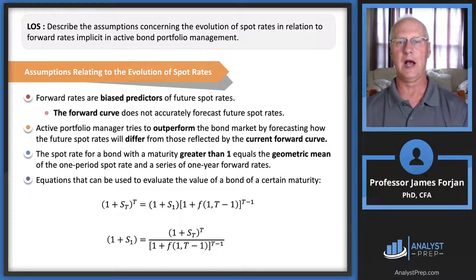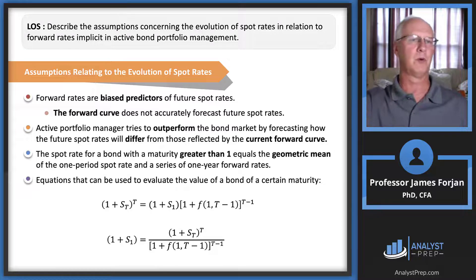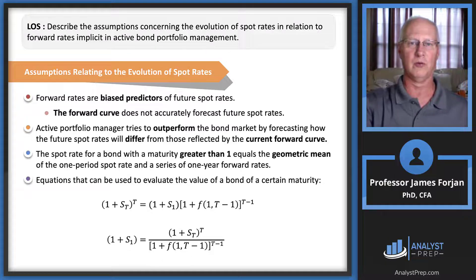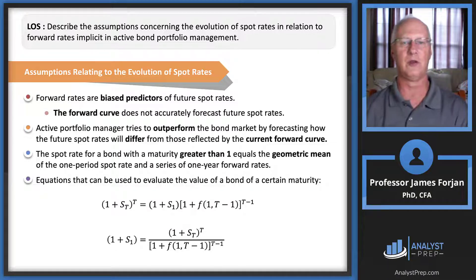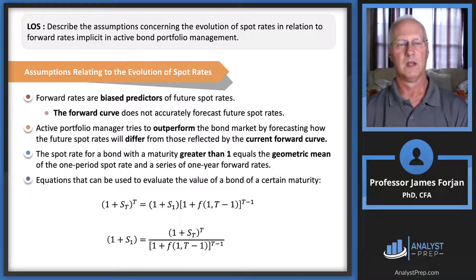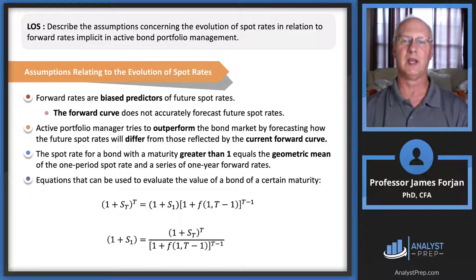An active portfolio manager will try to outperform the bond market by forecasting how future spot rates will differ from those reflected in the current forward curve. With an upward sloping spot curve and an even steeper forward curve, we try to minimize the difference between the two to identify undervalued bonds. Third, the spot rate for a bond with maturity greater than one period equals the geometric mean of the one-period spot rate and a series of one-year forward rates.